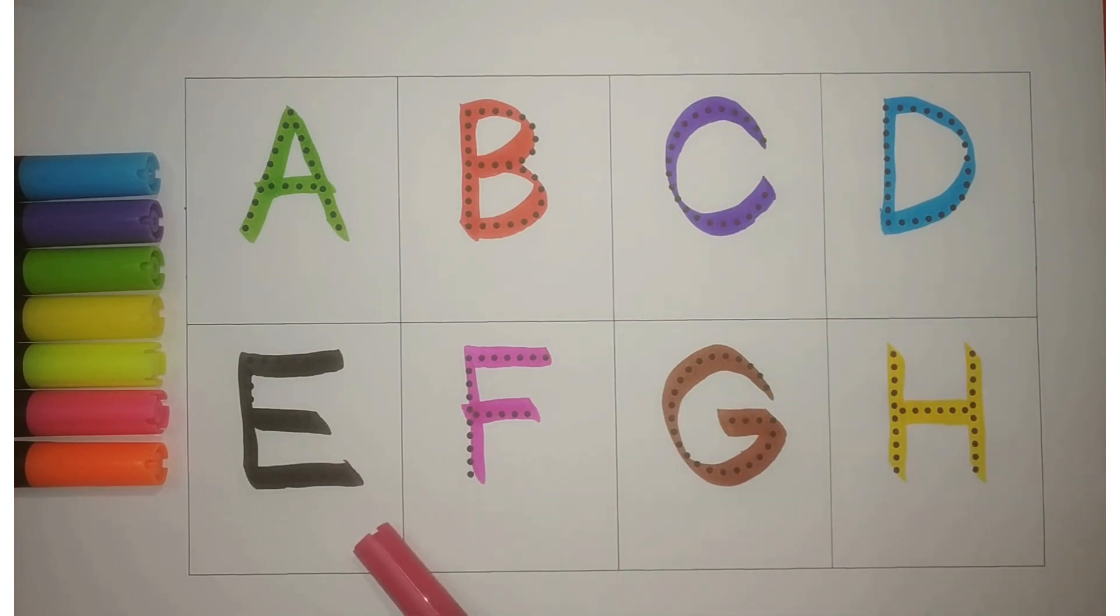E, black, E for elephant. F, pink, F for fish. G, brown, G for goat. And H, yellow, H for horse.